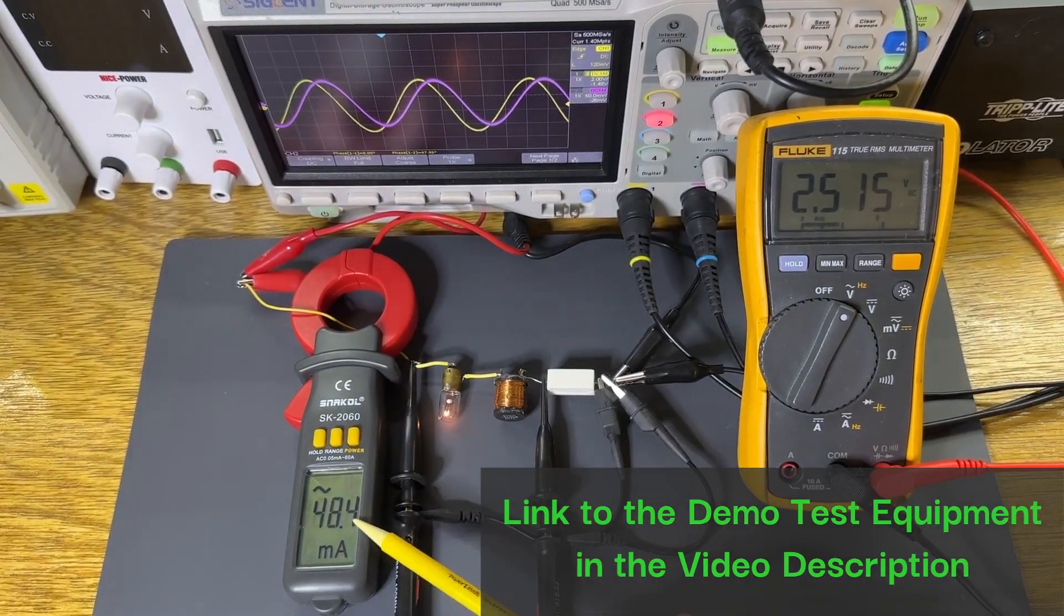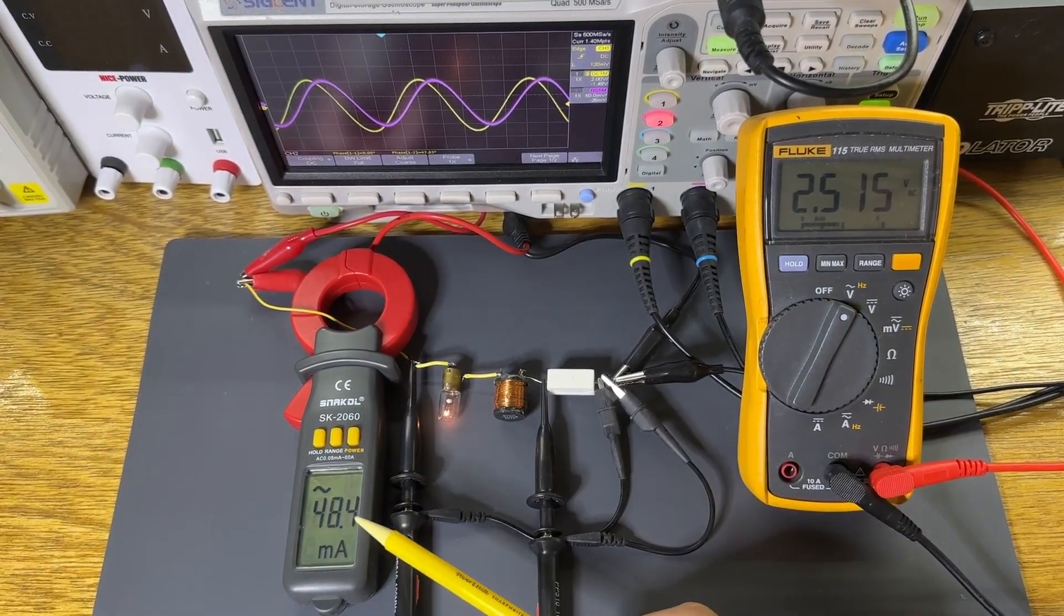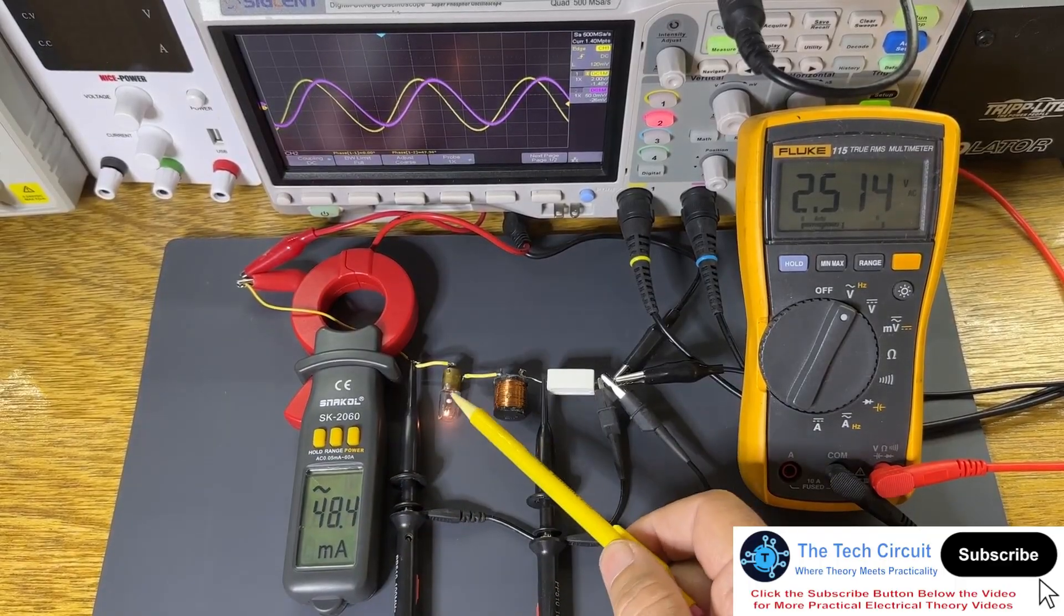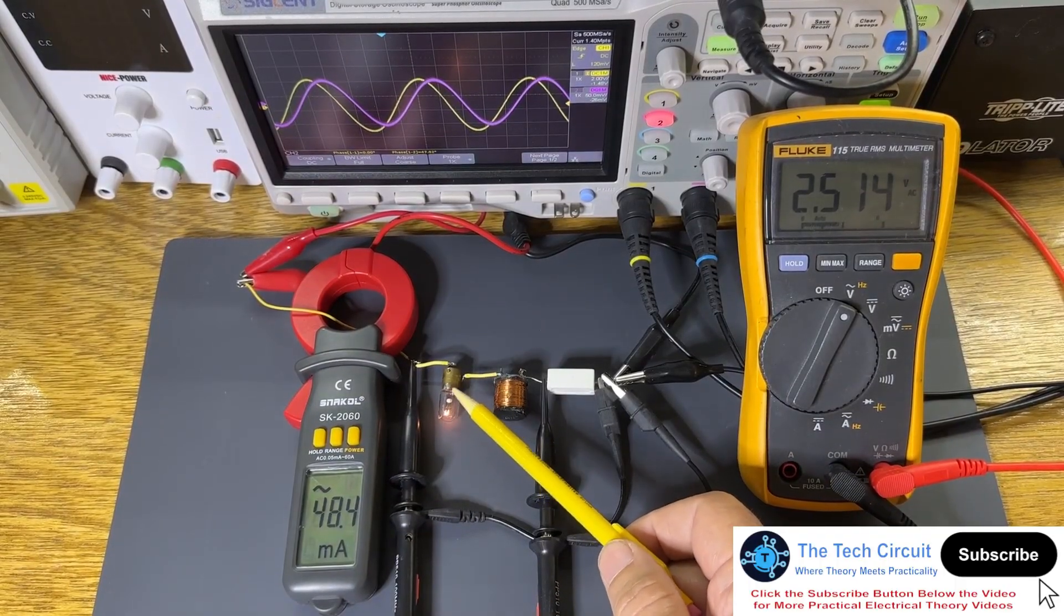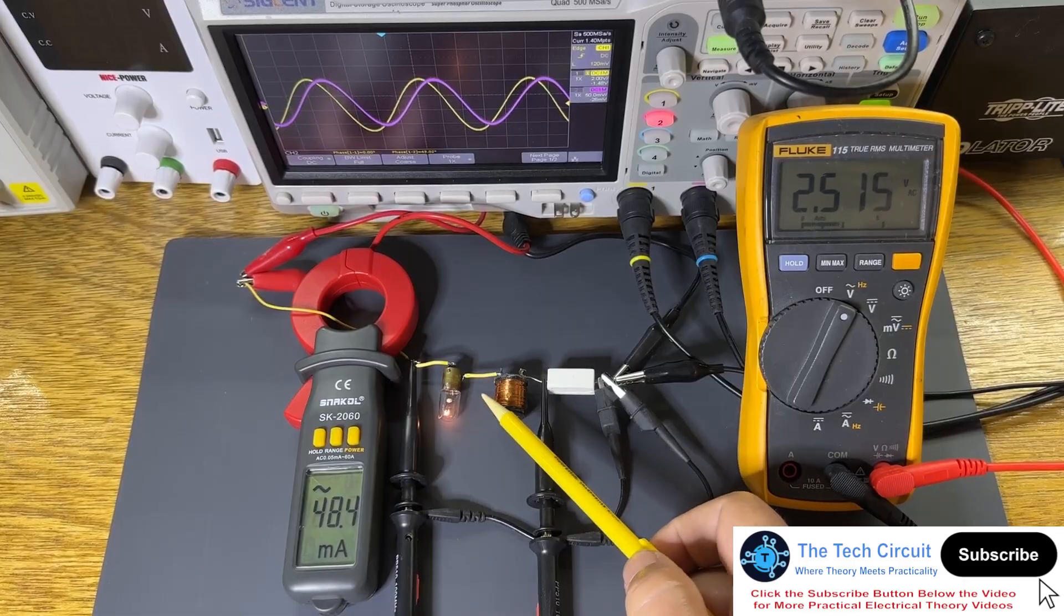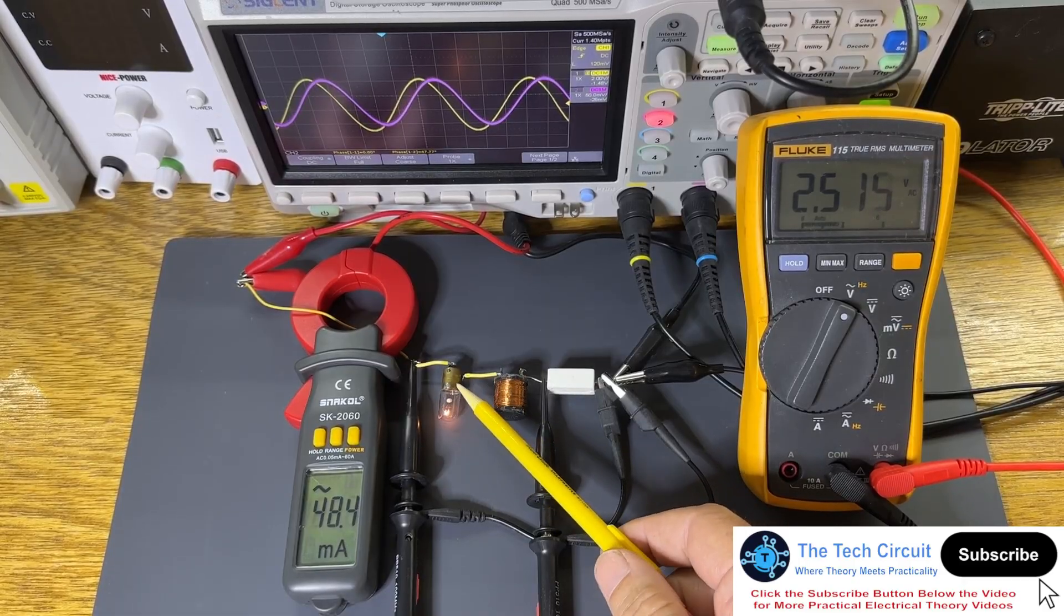Over here, this meter is measuring the circuit current, which is about 48 milliamps. This is more current than is needed to power this light bulb due to the low power factor of this circuit. This is what we are going to fix. And here's how we're going to do that.